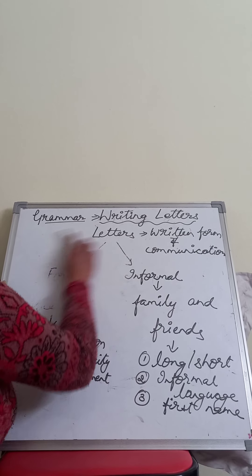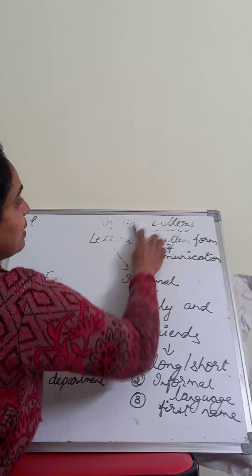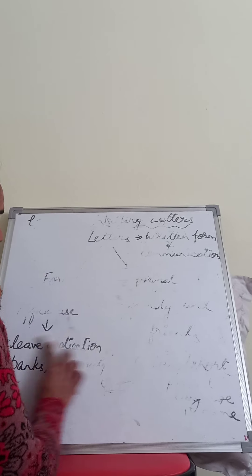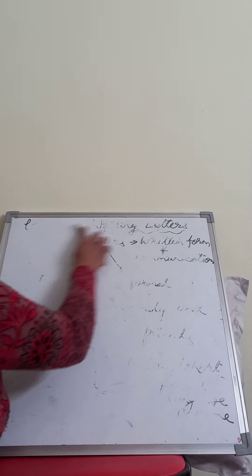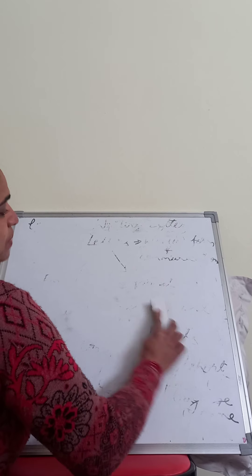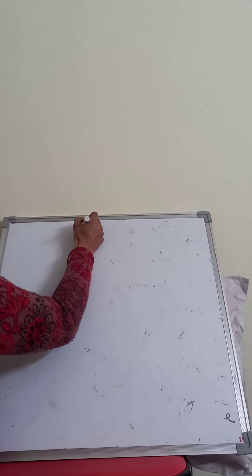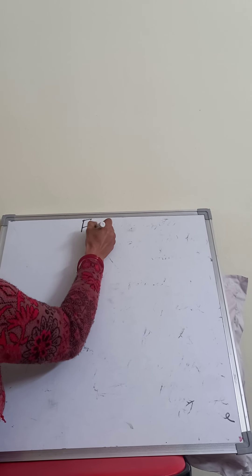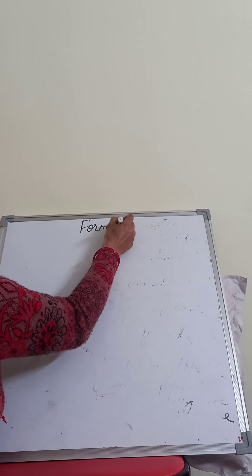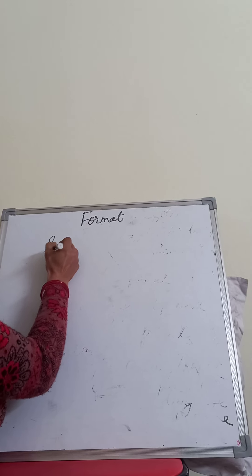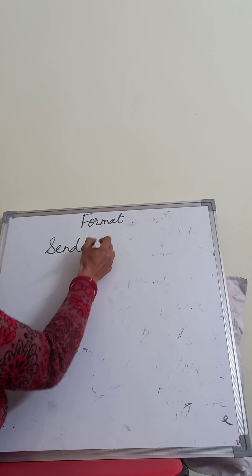Now moving ahead with the format of writing informal letters. You know format is very important when writing the letter — it is the way how we have to frame the letter. We have done format for each and every creative section: notice writing, message writing, everywhere. Now, the first point we have to take care of in the format is the sender's address.